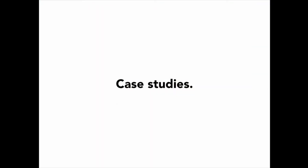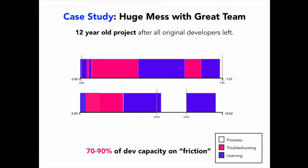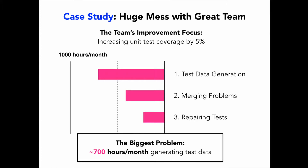So, case studies. One project I was working with had this huge mess with a really great team — all the original developers had left and it was this old, clunky project. This is what it looks like when you're spending 90% of your time figuring out what to do and 10% of your time actually doing stuff. A lack of familiarity has this enormous impact on the amount of friction we experience. The team wanted to work on improvement but wasn't sure what to work on, so they said, let's work on increasing unit test coverage by 5%. Then we started measuring the data, and these guys were spending around 700 hours per month generating test data for whatever tasks they were working on. But this didn't come up in their retrospectives at all — it was just considered a normal part of the work until we started measuring how much time was spent. Once we knew what problem to solve, it was really easy to build tools that could help bring down this time tremendously.